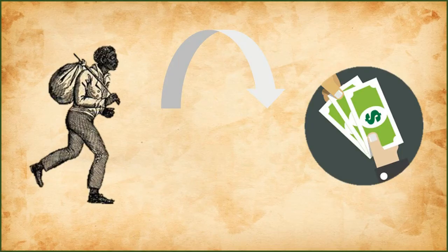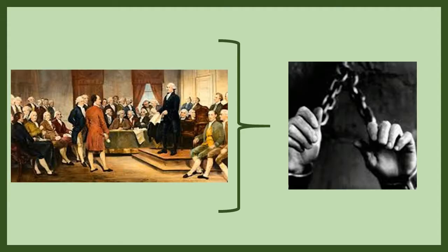The Founding Fathers knew that slavery was an essential part of the economy for a growing nation, and without it, the economies of the South, and eventually the country, would fail. That's why they made it illegal for Congress to outlaw slavery until 1808.